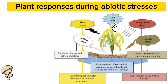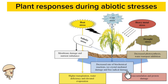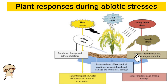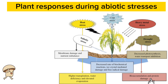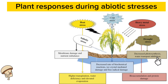During cold stress, there is a decreased rate of biochemical reactions, ice crystal mediated damage, and free radical damage. During heavy metal stress, plants show bioaccumulation and protein damage. While in drought stress, there is decreased photosynthesis and water transport inhibition.